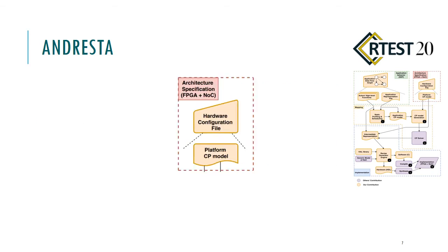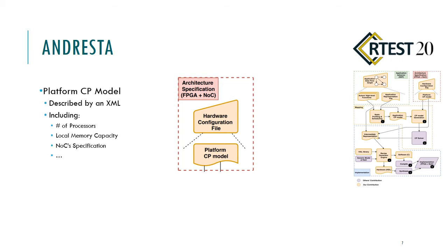The second input of UNRESSA is architecture specifications. It includes, for example, number of processors, local memory capacity, NOC specifications like packet length, address widths, and similar parameters. We can describe this information using an external file.